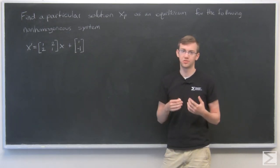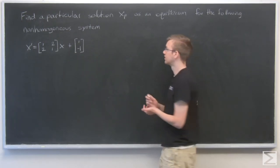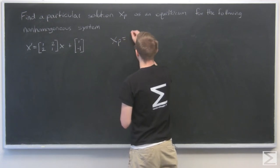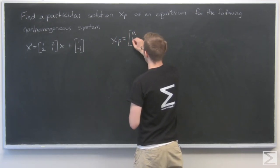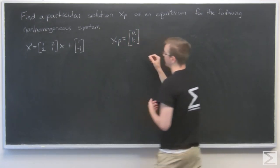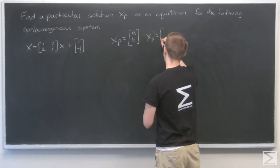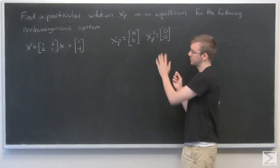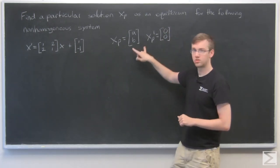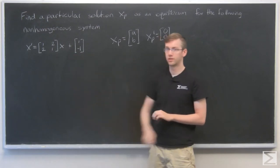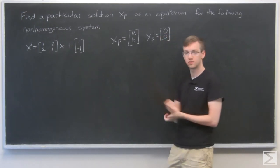So our particular solution, xp, is just going to be constants. So it's going to be an xp for some vector a and b. And from that, we also know that xp prime is going to be 0, because the derivative of constants is just 0. So we can plug these two back into our equation right here and figure out what these constants a and b are supposed to be.